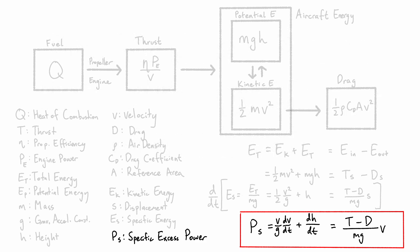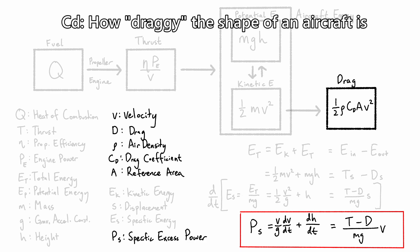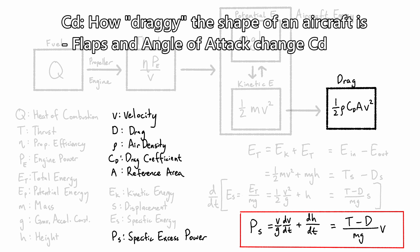If we want to take a closer look at what affects specific excess power, thrust is dependent on velocity, since in props, the prop efficiency changes depending on the speed, and in jets, the engine power increases with speed. Both of these things also change with altitude. Drag is affected by the square velocity, which means at very high speeds, drag gets much larger than thrust. Drag is also affected by rho, the air density, which means it decreases at higher altitudes. And drag is also affected by coefficient of drag, which for now we can think of as just how draggy the shape of our aircraft is. For example, lowering flaps increases coefficient of drag, and so does pulling angle of attack, which is why turning increases drag.